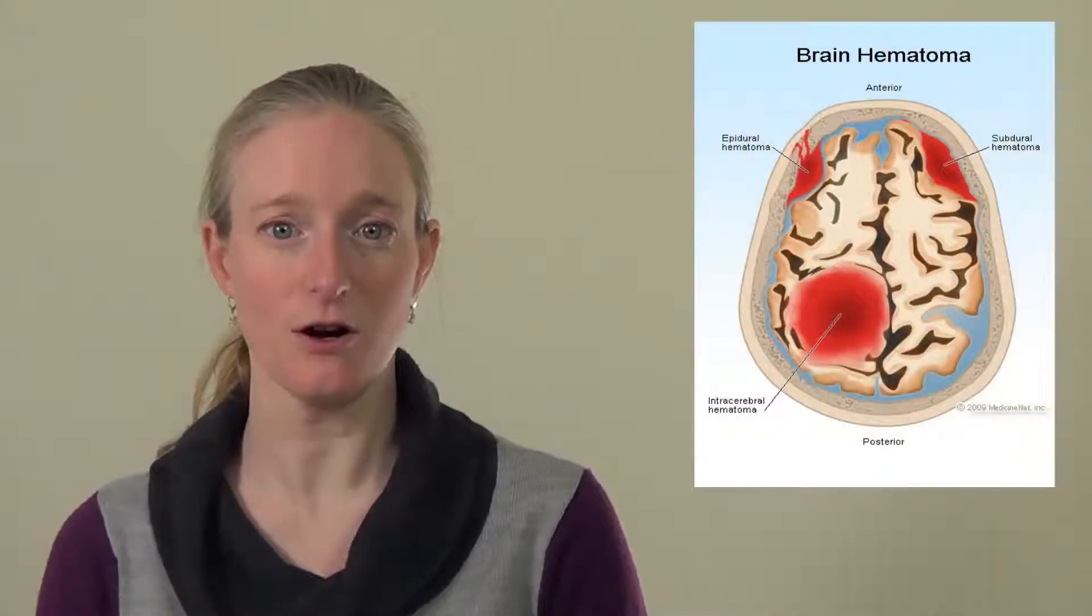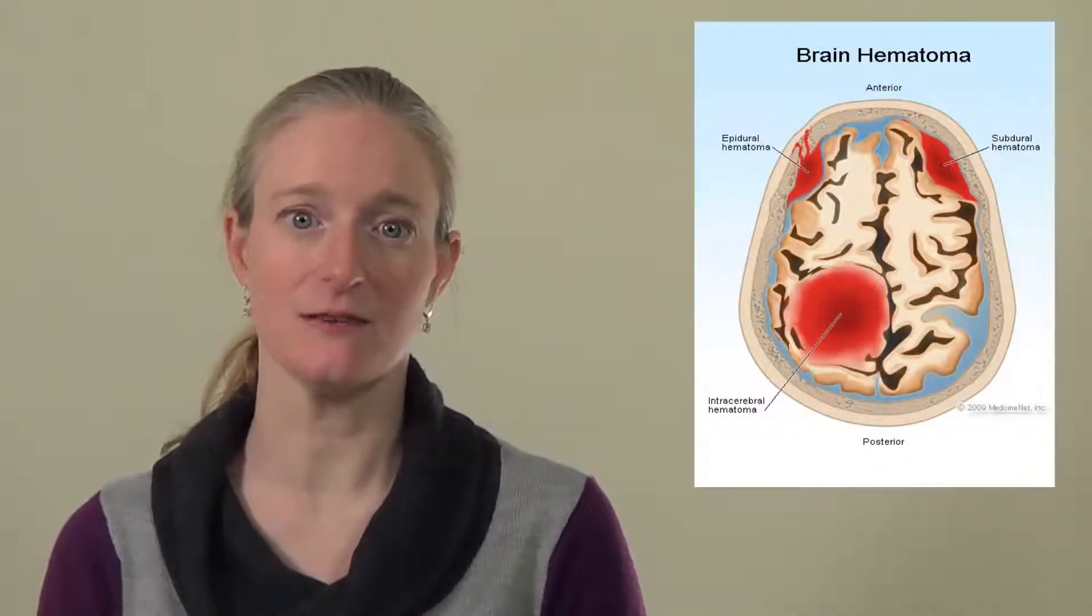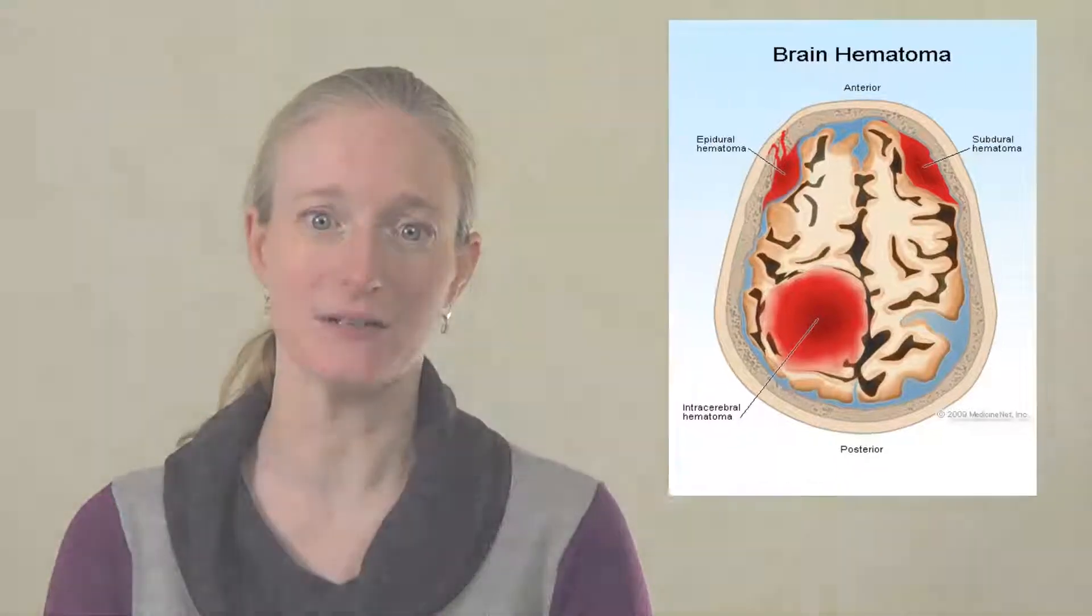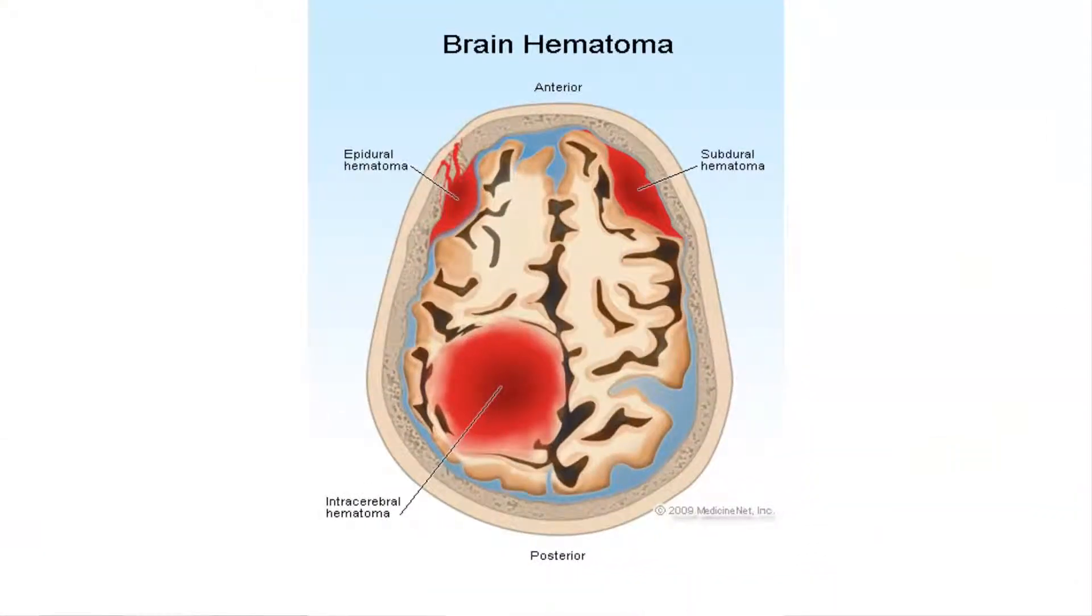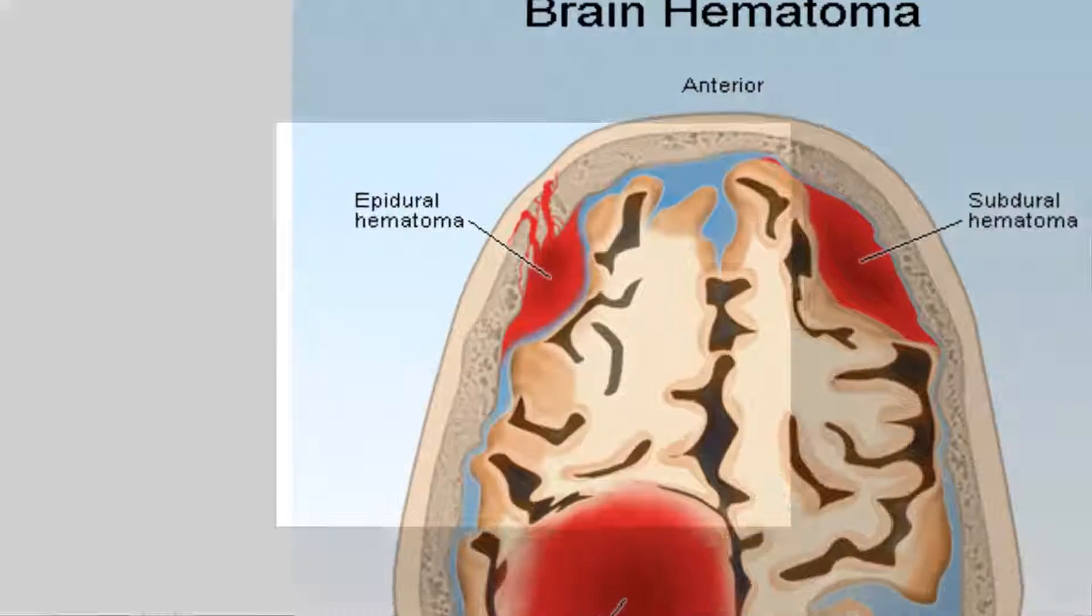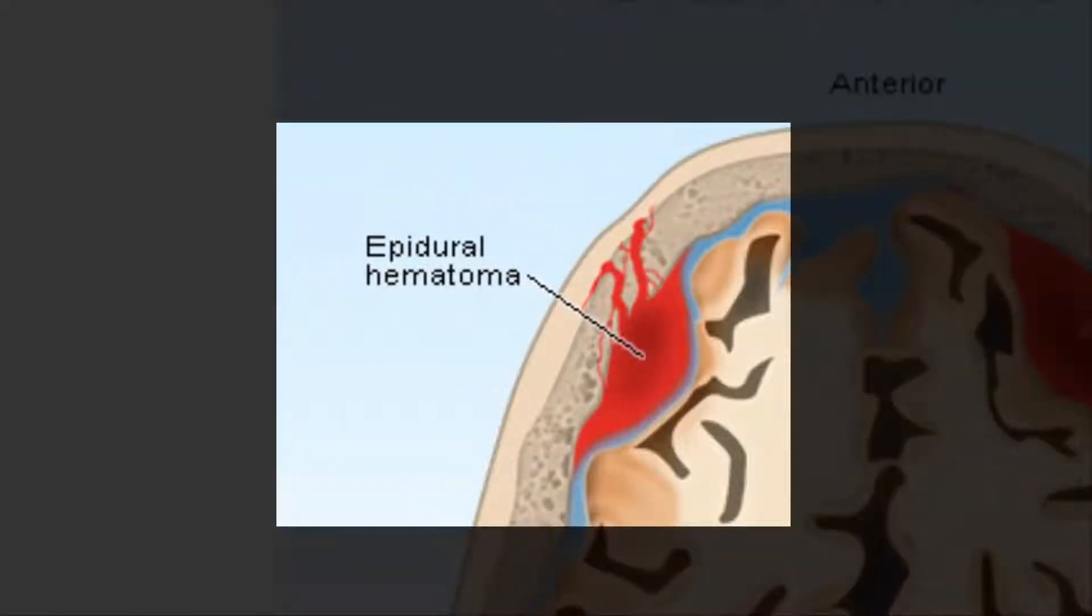There may be a skull fracture that bleeds and forms a collection of blood directly beneath the skull but above the outer layer of the meninges called the dura. Such a hemorrhage is called an epidural or extra-dural hematoma.